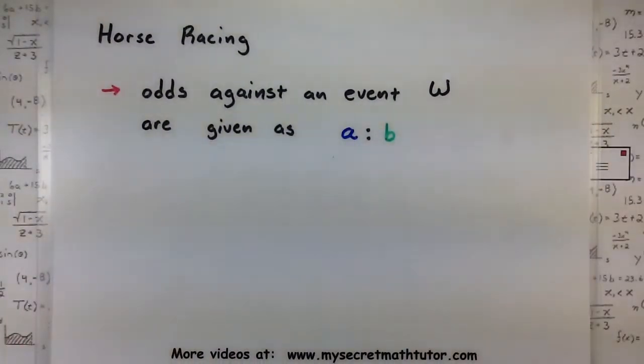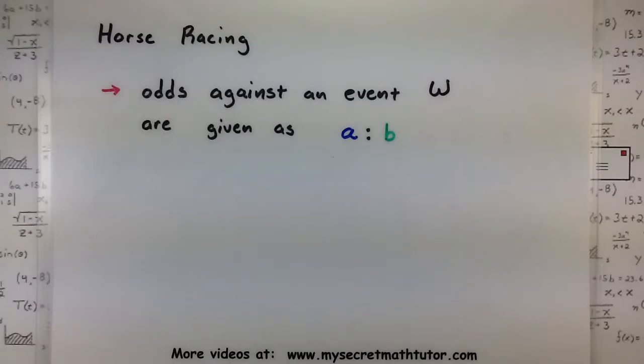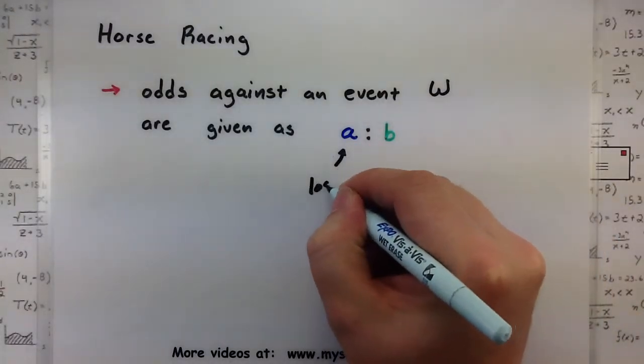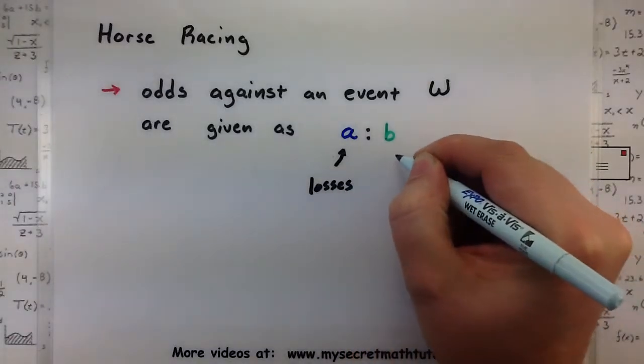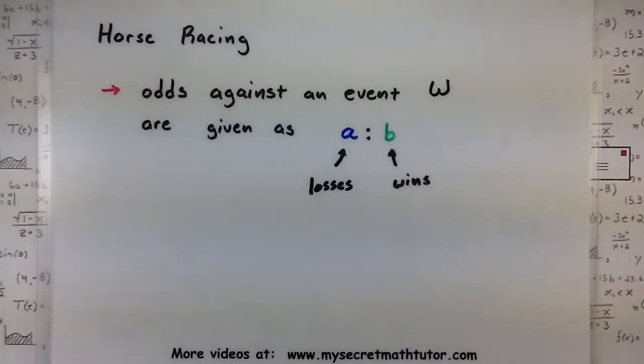If you were looking at horse racing, they like to give you the odds against an event W, and they're usually given as a ratio like A to B. What they're talking about is that A represents the losses and B are wins.